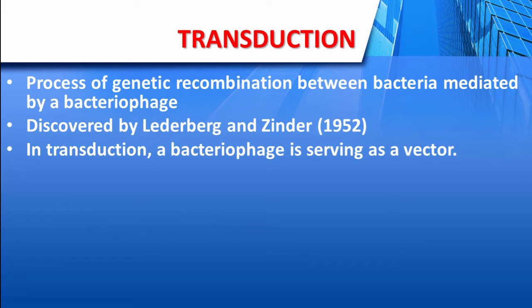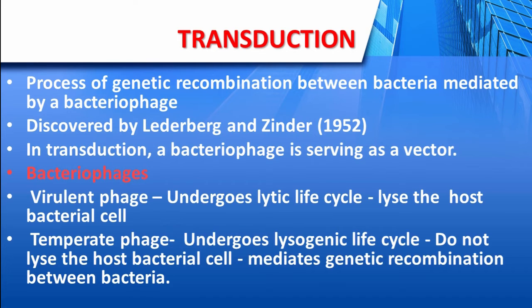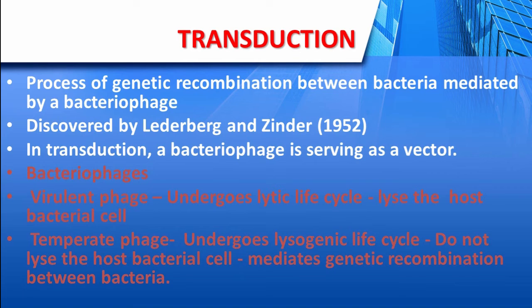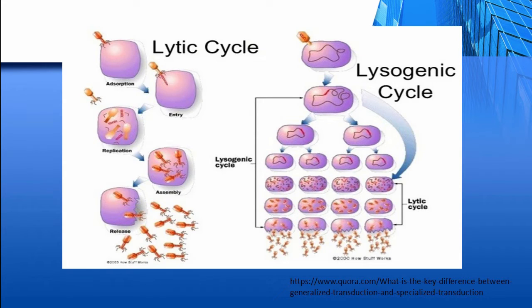Bacteriophages are mainly of two types: virulent phages and temperate phages. Virulent phages undergo a lytic life cycle — they take control of the host bacterial cell, undergo multiplication within it, and progeny phages are released by the lysis of the host bacterium.